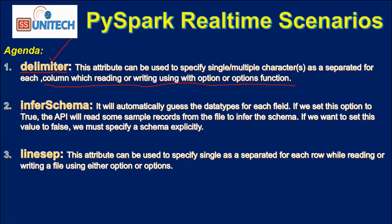Next is the inferred schema. It automatically guesses the data types for each field while reading the data. If we set this option to true, the API will read some sample records from the file to infer the schema. If we set it to false, we must specify the schema explicitly. Sometimes it can be dangerous to set this as true because it only picks a few rows to guess the actual data type.